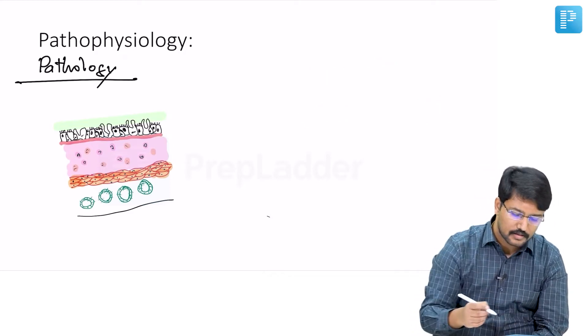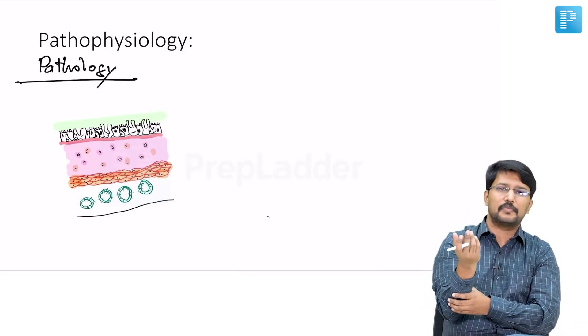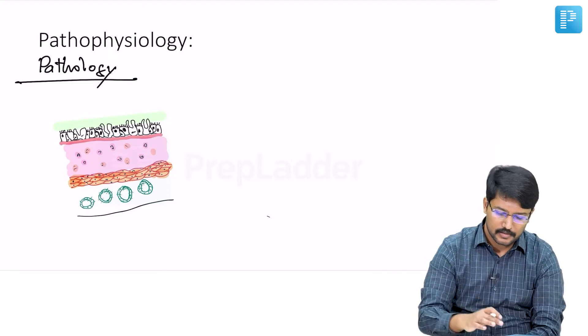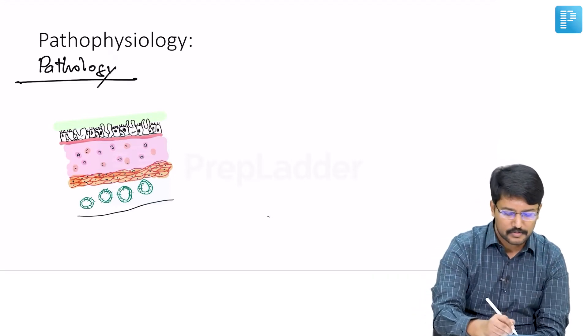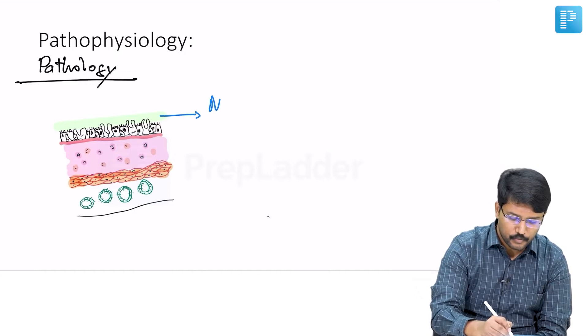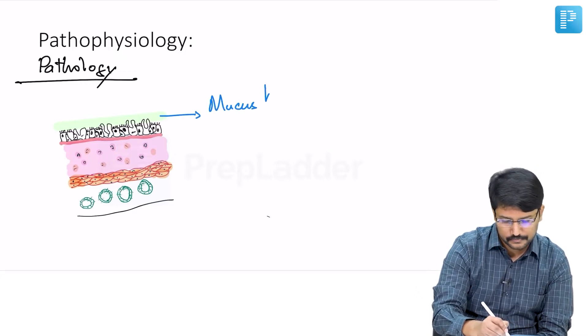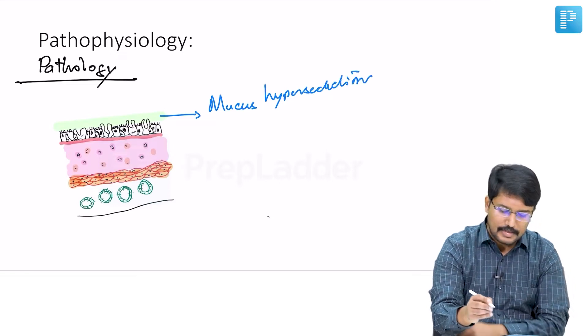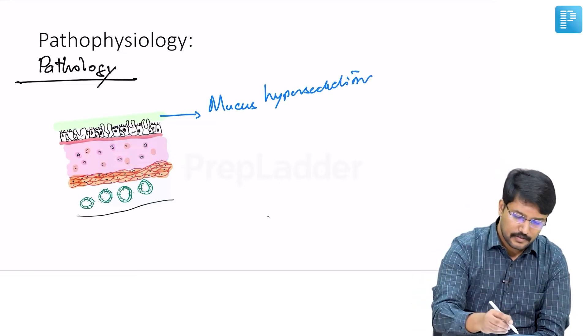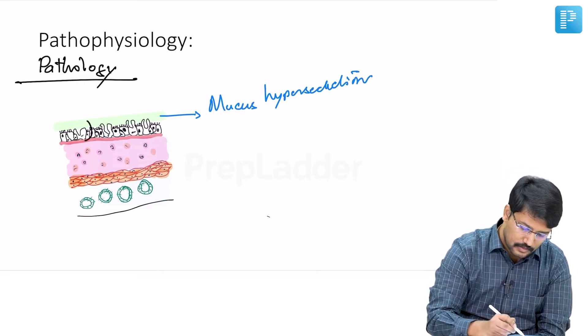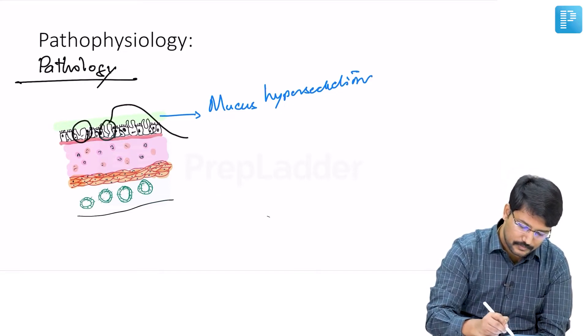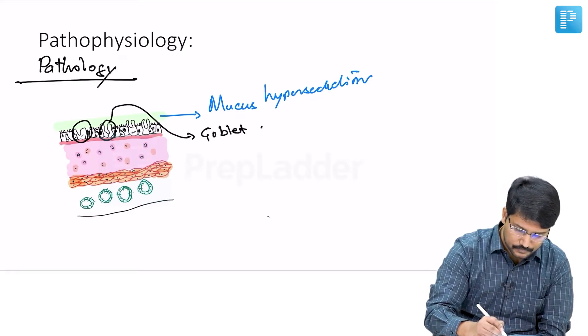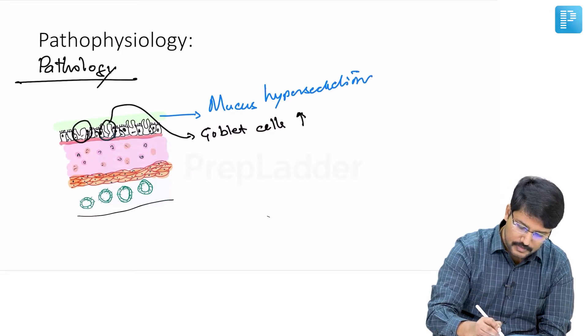If you see the biopsy specimen of patients with bronchial asthma, you will notice certain changes. The first and most important is mucous hypersecretion. Second, there is goblet cell hyperplasia - the number of goblet cells is increased.